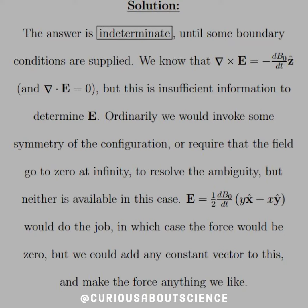The answer is actually indeterminate until the boundary conditions are supplied — nothing new there, that's all differential equations really. We know that the curl of E is equal to the negative derivative of the B field, so that's just dB naught over dt in the z-hat direction. We also know that the divergence of the E field is zero. But this is insufficient information to determine E.